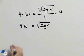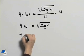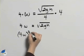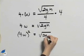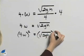To undo the square root, we'll have to square both sides. So we'll have 4w squared equal the square root of 2gh squared.